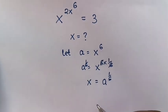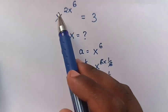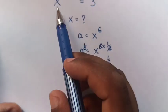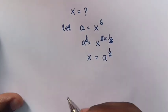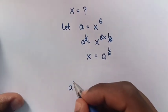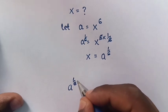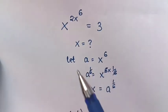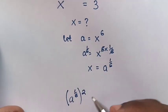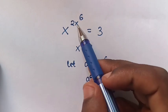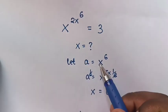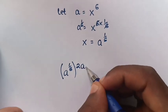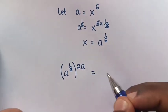Then, we substitute the value of x into here — x is equals to a power of 1 over 6. So, x will substitute a power of 1 over 6. We have 2 power of 2, and x power of 6. Remember, we let x power of 6 is equals to a. So, here, it will be 2a is equals to 3.